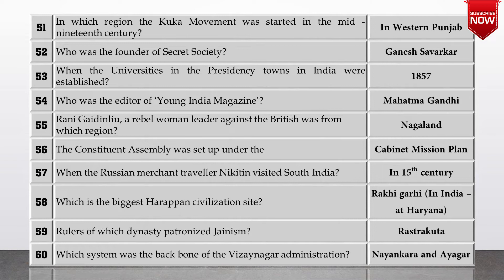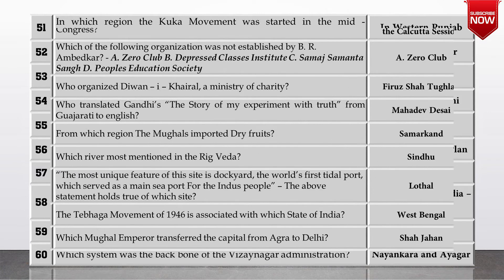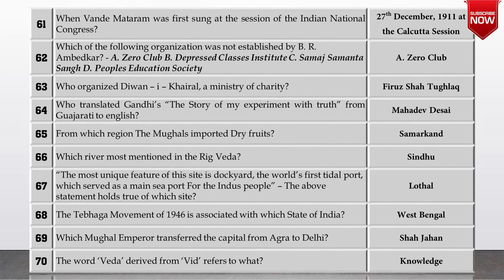Next: rulers of which dynasty patronized Jainism? It was the Rashtrakutas. Which system was the backbone of the Vijayanagara administration? It was Nankara and Ayagal. Next question: when was Vande Mataram first sung at the session of the Indian National Congress? It was on 27th December 1911 at the Calcutta session.